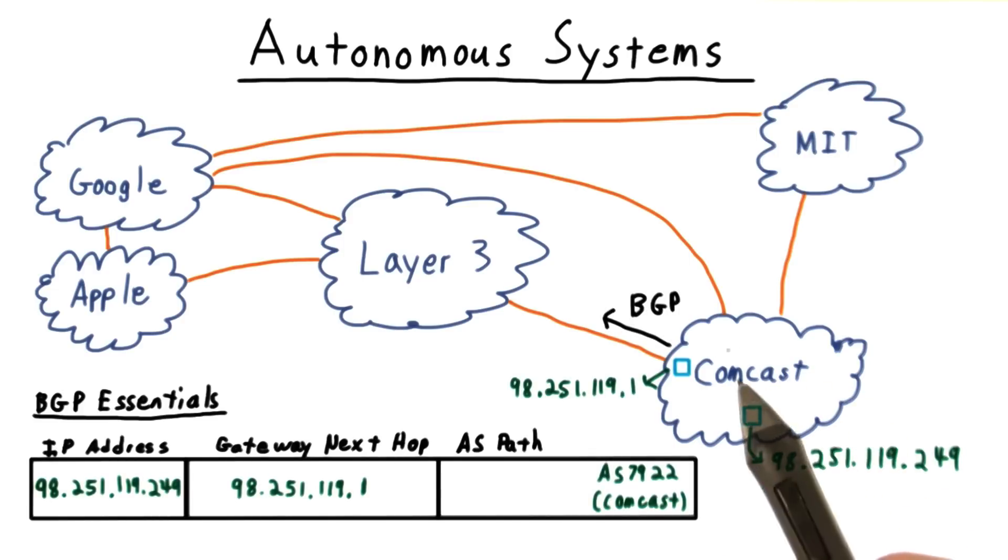suppose Comcast wanted to advertise my IP address. Then it would send an advertisement to its partners, which would include, let's say, Level 3. The AS path on the advertisement would just be Comcast's own AS number, and the next hop would be the desired entry point or gateway into the Comcast network.